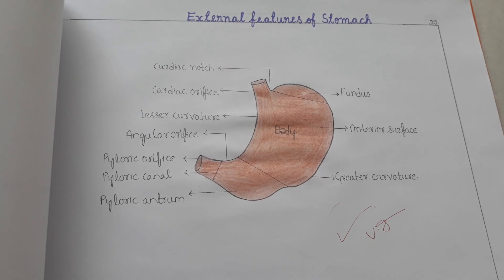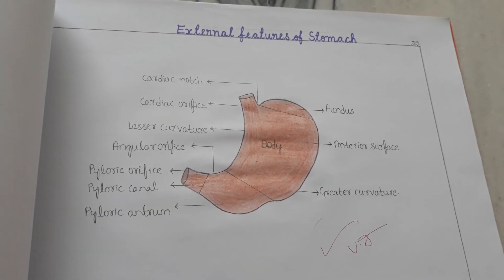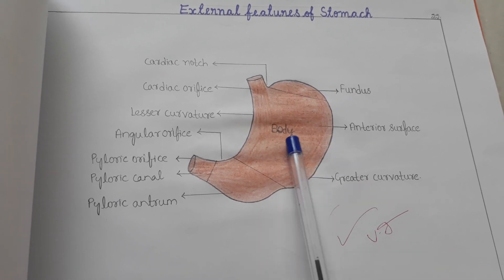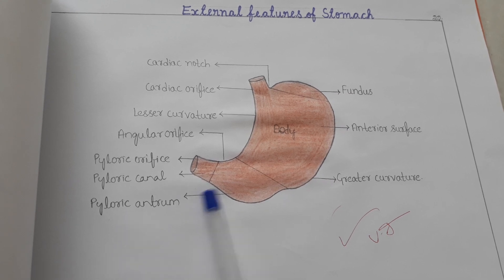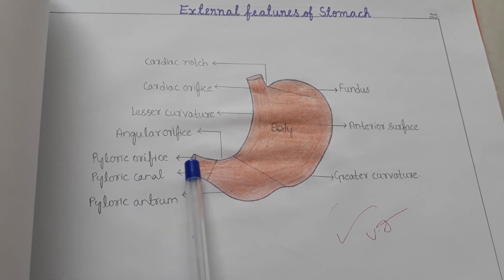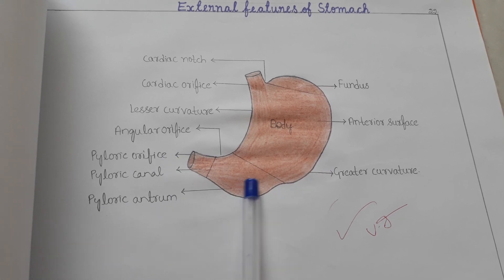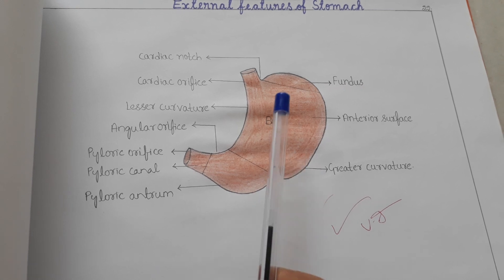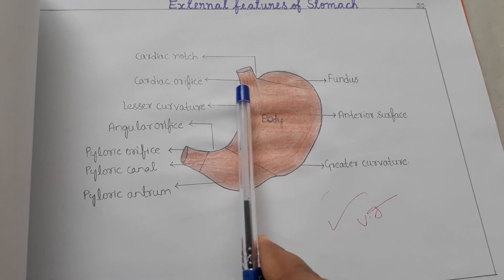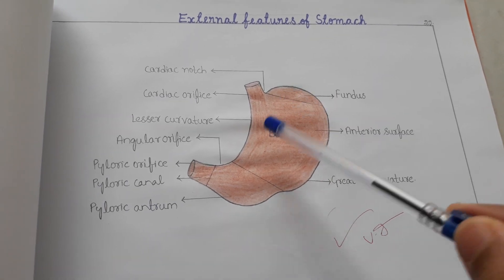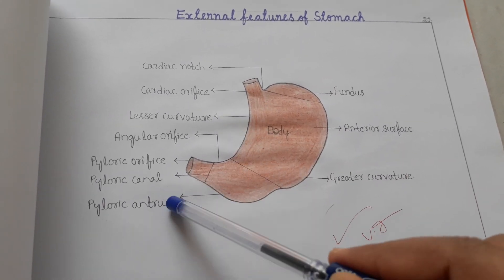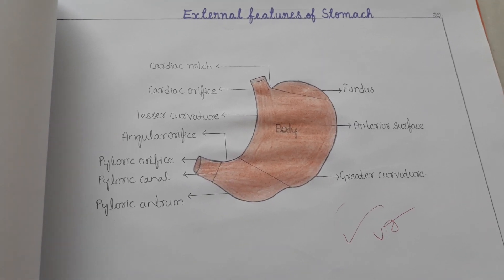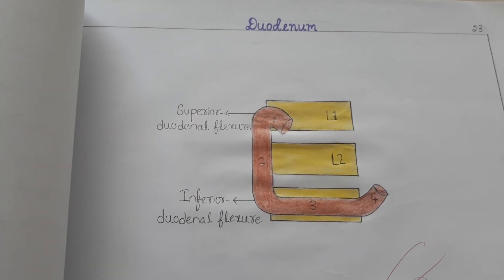External features of the stomach: here you have the cardiac notch, fundus, body, pyloric antrum, pyloric canal, pyloric orifice, angular notch, greater curvature, lesser curvature, and cardiac orifice. Any part will be pointed and you have to name it. This is the duodenum.